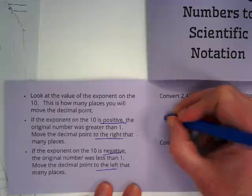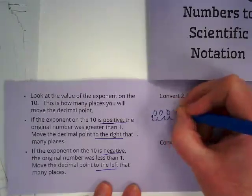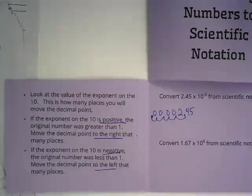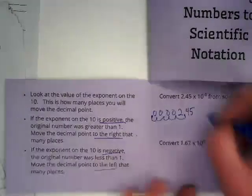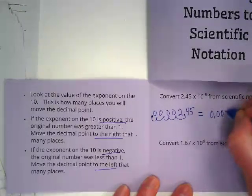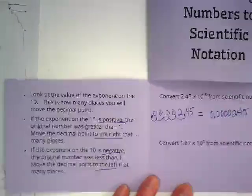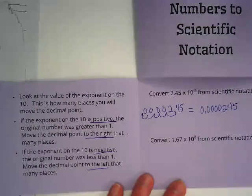So in my messy way, I just do it this way. One, two, three, four, five. And I fill each of those in with a zero. And this equals 0.0000245, which is a very small number.